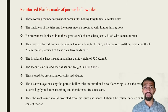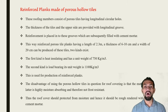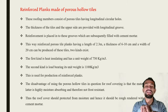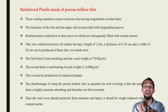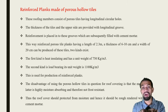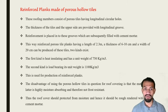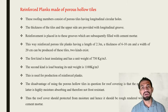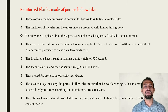Reinforced planks made of porous hollow tiles consist of tiles having longitudinal circular hollow sections in the lengthwise direction. The thickness of the tiles and the upper side are provided with longitudinal grooves so they can interlock with each other. Without grooves, they cannot interlock, and having only horizontal joints between planks would cause water leakage. Reinforcement is placed in these grooves, which are subsequently filled with cement mortar.